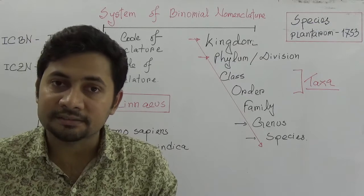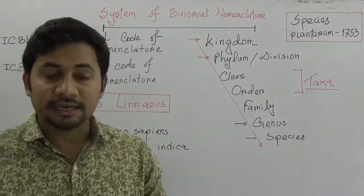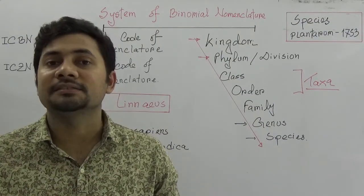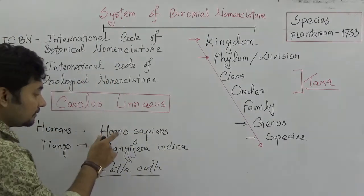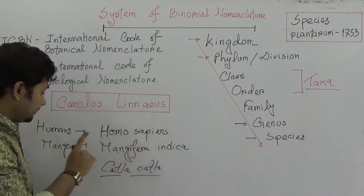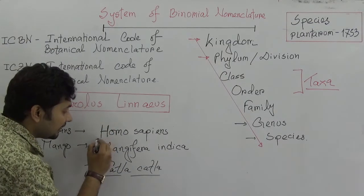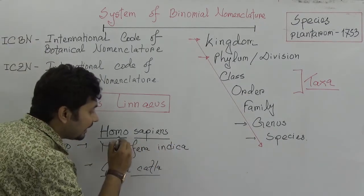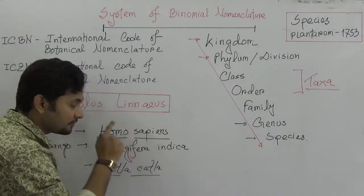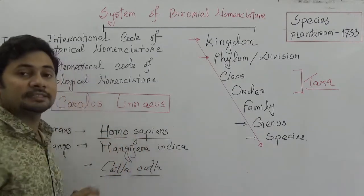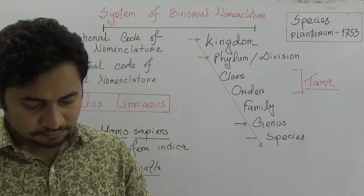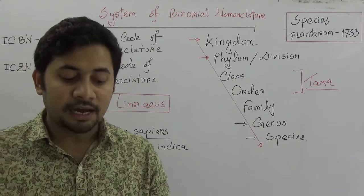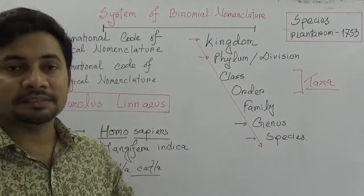Principle number six: when a scientific name is written by hand, the two parts should be separately underlined. For example, Homo sapiens — the genus and species should each be underlined separately, not with a single continuous line. There should be a distinct separation between the two underlines.